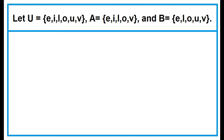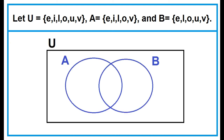Another example: Given set U, set A, and set B. Place the elements of these sets in the proper locations in the given Venn diagram. The two circles overlap because there are elements in set A that also belong to set B. Place the elements common to both sets A and B in the region where the two circles overlap: E, L, O, V. Then outside that overlapping region, place the rest of the elements of set A and set B.